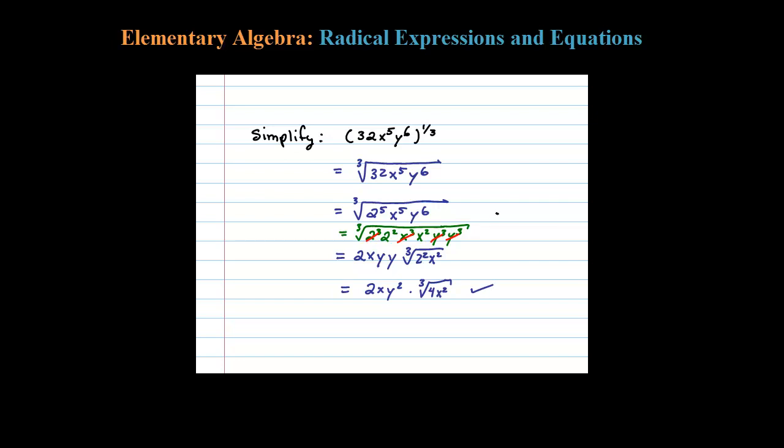skip from this step straight to this step by looking at the index. 3 goes into 5 one time—that says you're only going to be able to simplify one 2 out. 3 goes into 5 once with 2 left over.